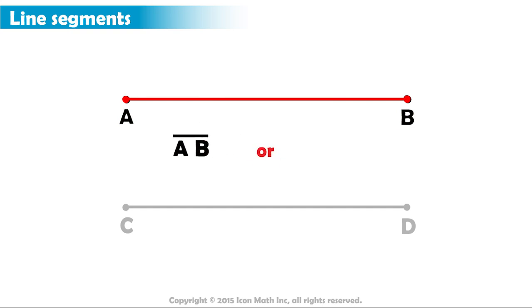Or we can call it BA. The bar over the letters indicates it is a line segment. And the second line segment can be called line segment CD, and we can also call it line segment DC.